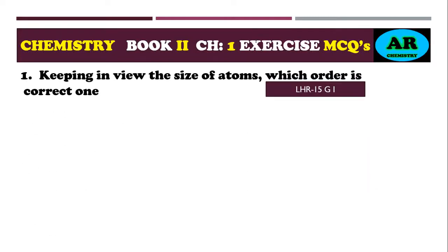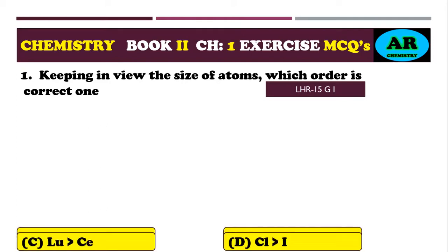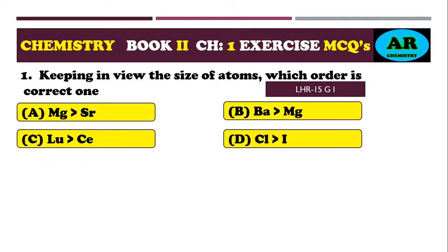First MCQ: keeping in view the size of the atom, which order is correct? Option alpha: Mg, Sr. Option beta: Ba, Mg. Option charlie: Lu, Ce. Option delta: Cl, I.